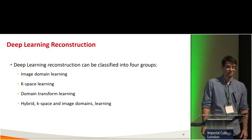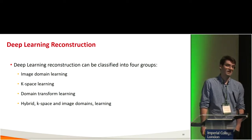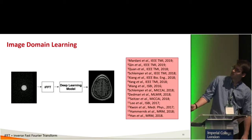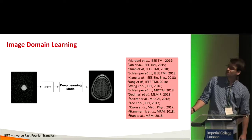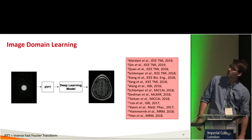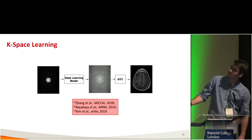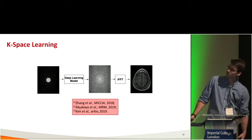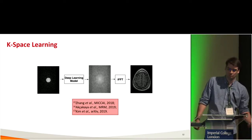Deep learning reconstruction can be classified into four groups: image domain learning, k-space learning, domain transform learning, and hybrid k-space and image domain learning. In image domain learning, you start with under-sampled k-space, take the inverse FFT to get a zero-fill reconstructed image, and process it with a trained network. Most works in the literature are image domain learning. In k-space learning, the goal is to estimate the missing samples in k-space — most such works focus on parallel imaging rather than compressed sensing.